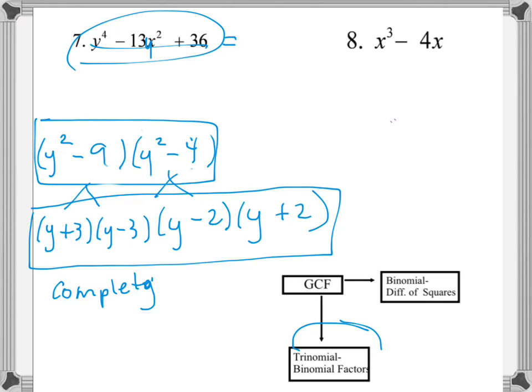That's where the idea of breaking it down completely comes in. At every step you have to ask: if I have a binomial left, can I break it down any further? Always make sure, because a common trick is that the binomials you factor into can themselves be factored further.